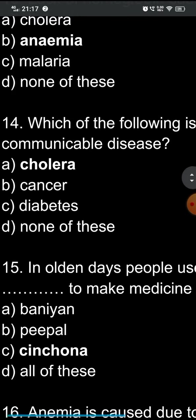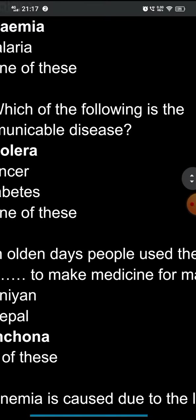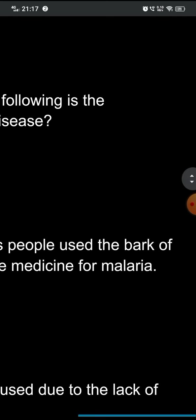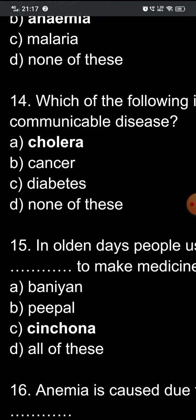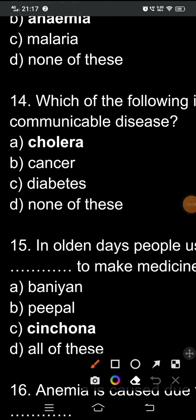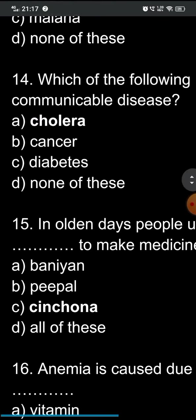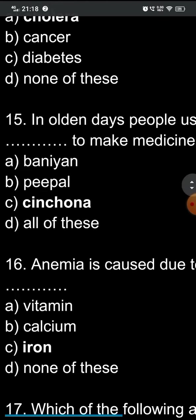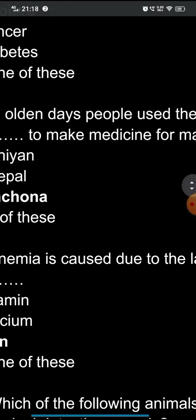Question fifteen: in olden days, people used the bark of which tree to make medicine for malaria? The options are: A) banyan tree, B) peepal tree, C) cinchona, D) all of these. The correct option is C — cinchona. In ancient times, people used the bark of the cinchona tree to make medicine for malaria.